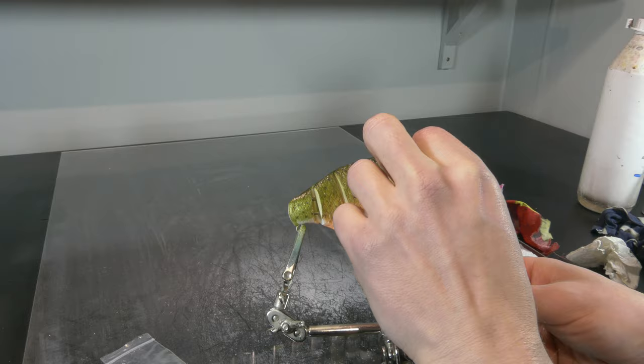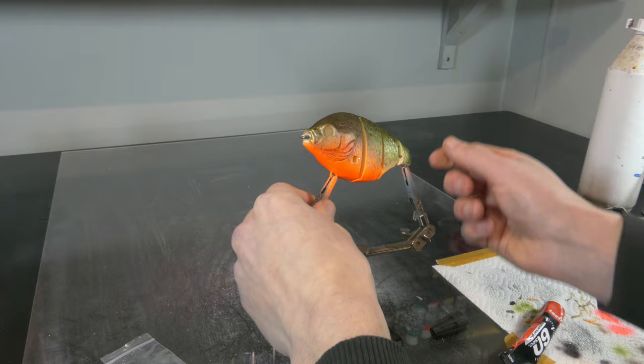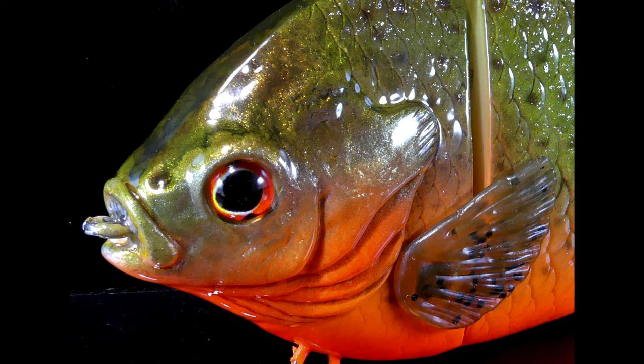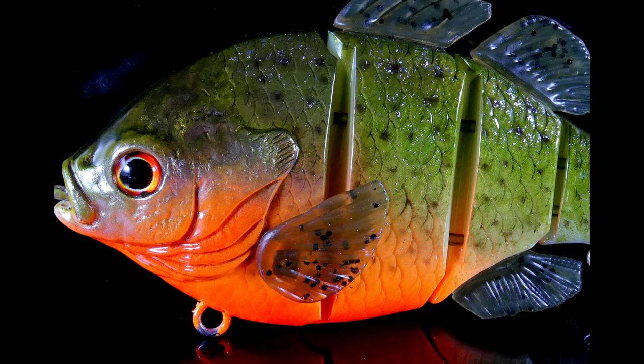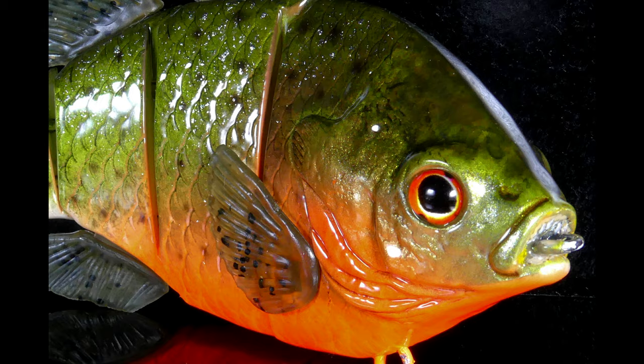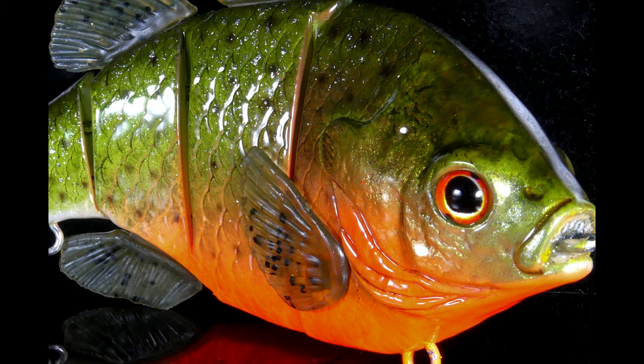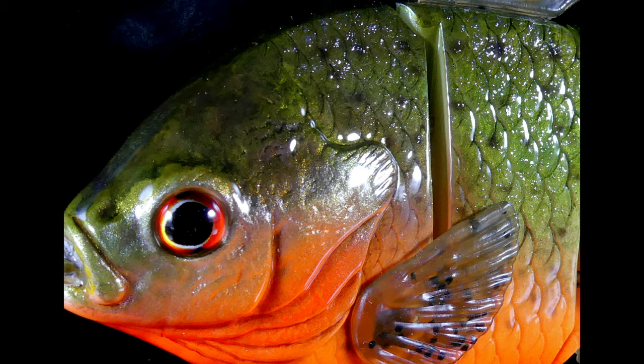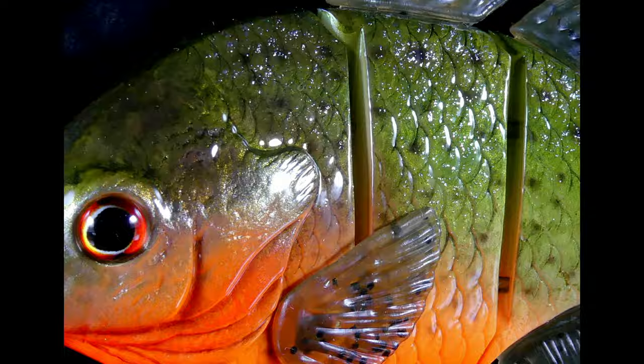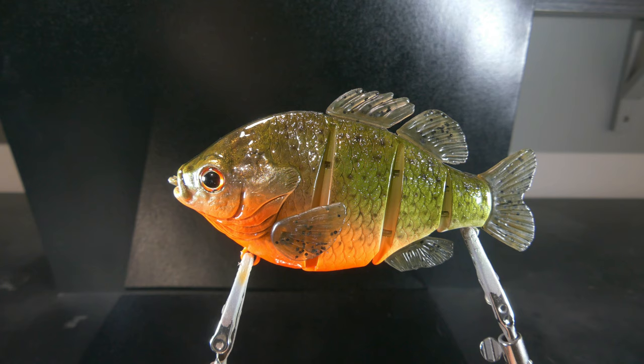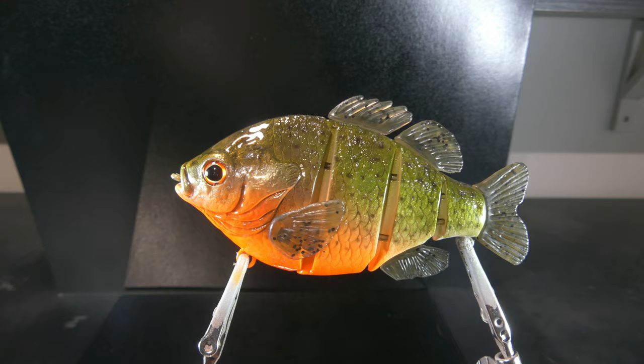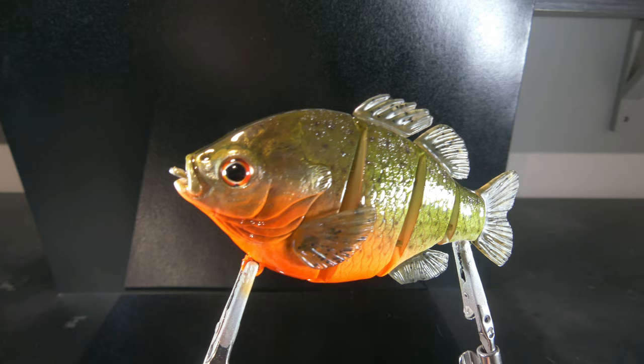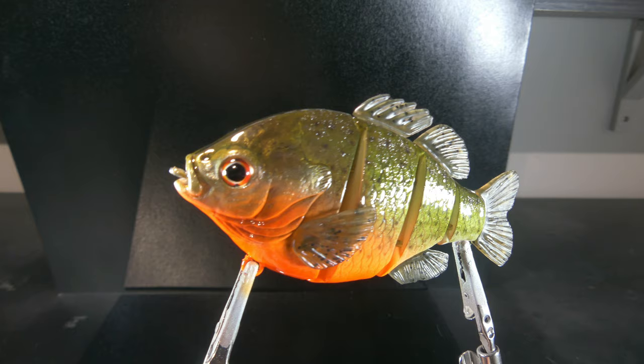Now I'm going to place the eyes, and I'm using these glass dome-shaped realistic eyes from Lureblanks, and these color match perfectly with the piranha's eyes. Ready for a clear coat. All right guys, our lure is finished, and I have to say this looks extremely realistic. Also that silver foil that we used to represent those silvery scales, that just looks so realistic on this lure. It's really nice.